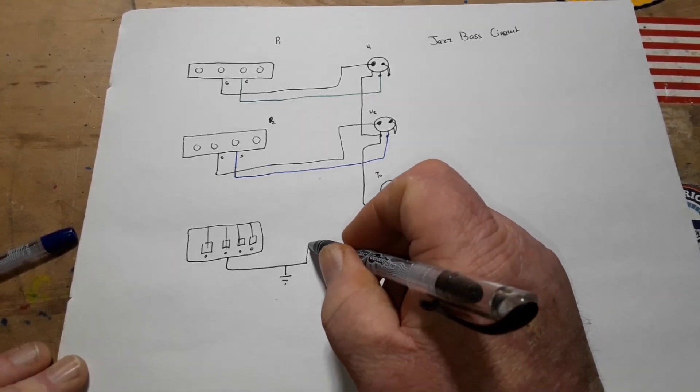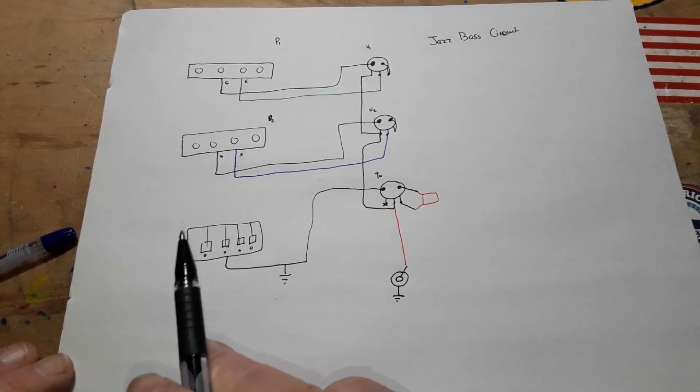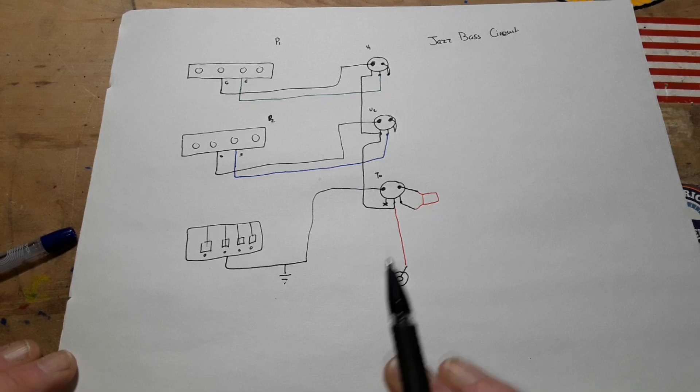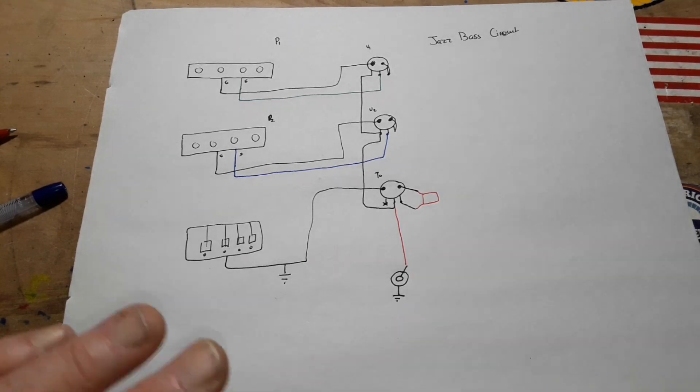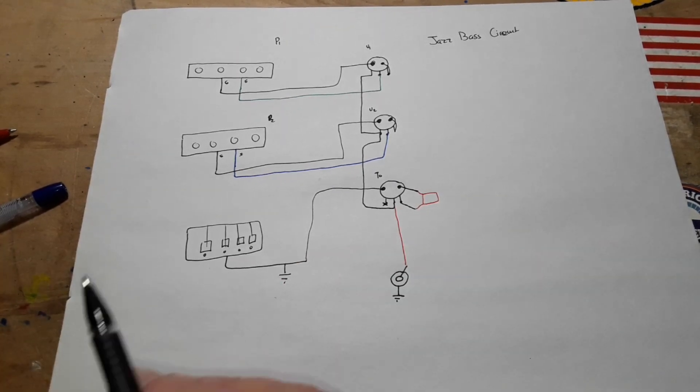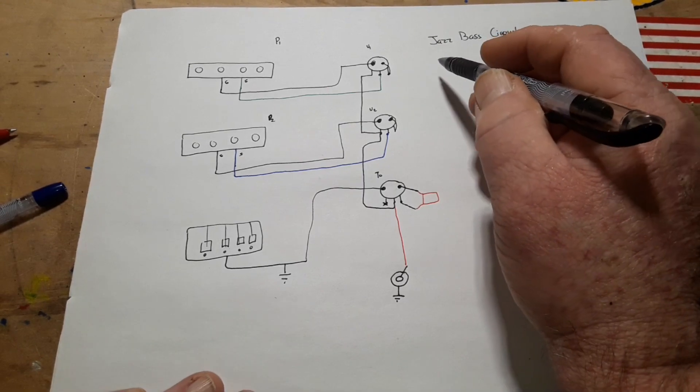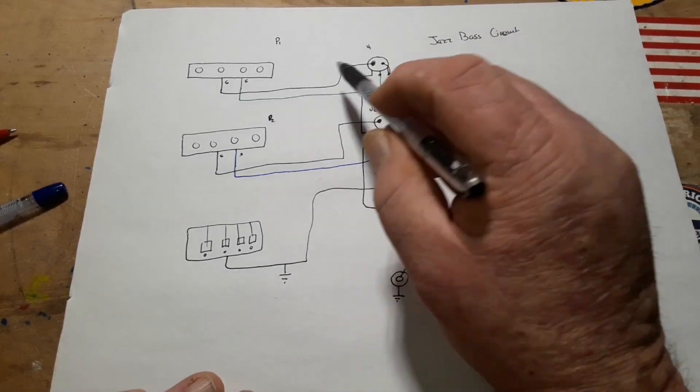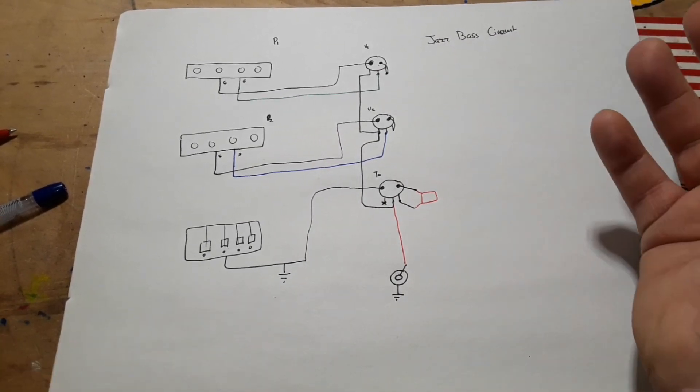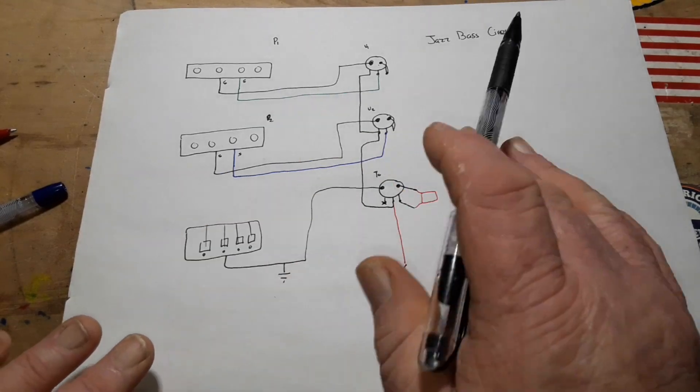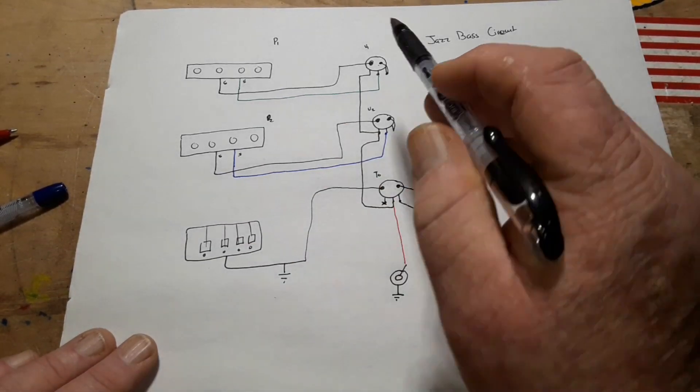We're also left with this ground here. You just solder it up there to that pot just like that. It's important that's there, you'll get a lot of hum if not. So what are we doing, why does this work, how does this work? Well, basically all we're doing for volume controls is we're determining a proportion of the signal to be sent to ground. That's it. We're sending some of the signal to ground, we're letting a little bit come through. That's what your volume knobs do.